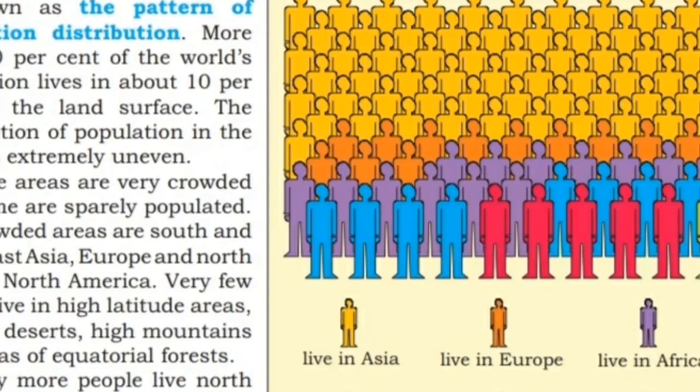More than 90 percent of the world's population lives in about 30 percent of the land surface. The distribution of population in the world is extremely uneven — some areas are very crowded and some are sparsely populated. The crowded areas are South and South-East Asia, Europe, and northeastern North America.